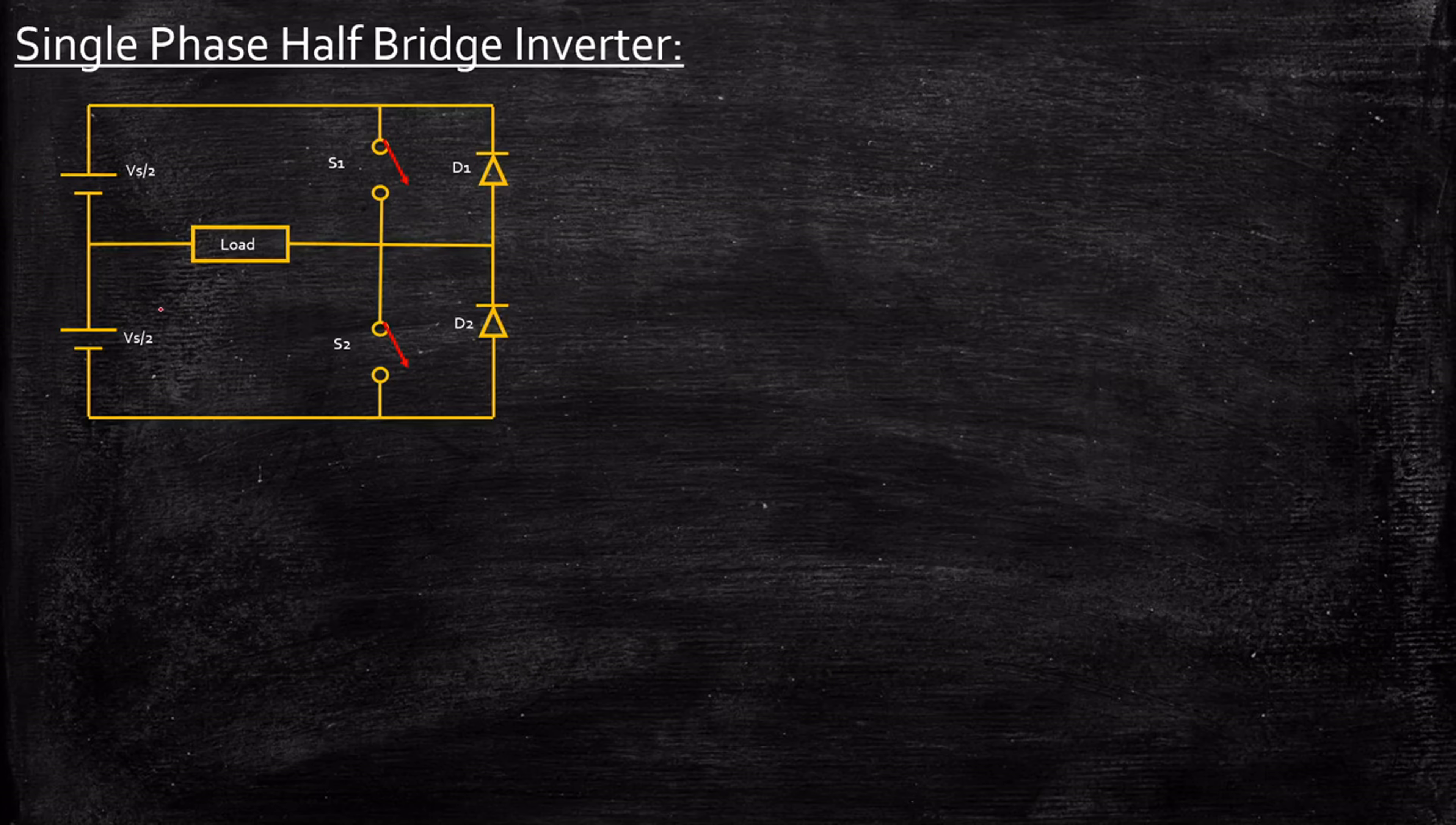If you carefully observe, you have a three-wire DC power supply, which is why it's distributed as Vs/2 and Vs/2. Practically, we would use a normal DC power supply with two equal capacitors to get this Vs/2 voltage. But this is an ideal scenario to give you a clear explanation, so I'm going to keep things as simple as possible.